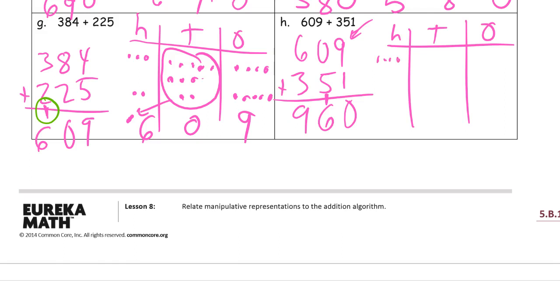With the chip model, 609 is 6 hundreds, 0 tens, and 9 ones. And now the 351 is 3 hundreds, 5 tens, and 1 one. That's ten ones. And now I have 6 tens. And just count my hundreds, 1, 2, 3, 4, 5, 6, 7, 8, 9 hundreds.